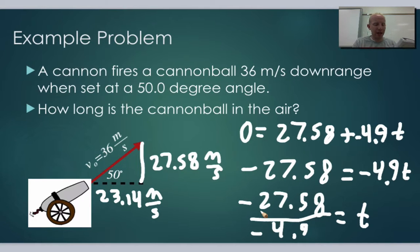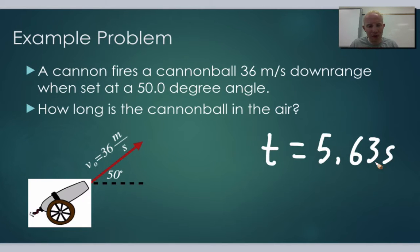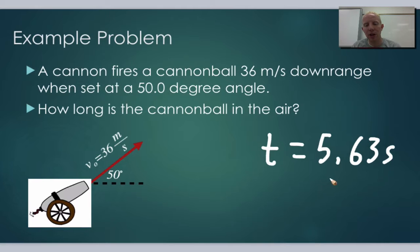Dividing both sides by negative 4.9, the negatives cancel and we get t equals 27.58 divided by 4.9. Calculating that gives us a total time in the air of 5.63 seconds.